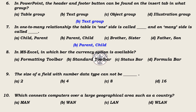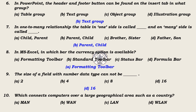8. In MS Excel, in which bar is the currency option available? Options: Formatting toolbar, Standard toolbar, Status bar, Formula bar. Answer: Formatting toolbar. 9. The size of a field with the number data type cannot be blank. Options: 2, 4, 8, 16. Answer: It should not be 16; it should be below 16.